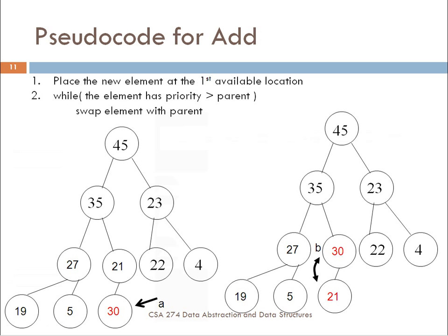Each of the levels is full except for the deepest level, in which case we add things as far left as possible. So we add the element to the first available location, and then the second step is to check the following property: while the element that you've added has a priority greater than the parent — meaning the value is greater than the parent — then you're going to swap the element with the parent.